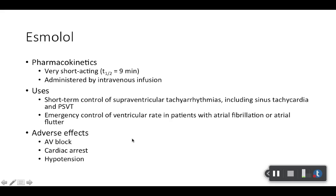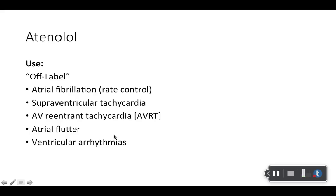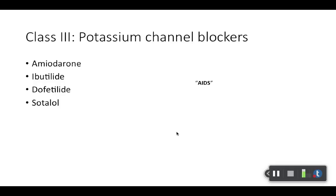Metoprolol is similar but more selective, which we talked about before, and it's used to treat all these different things — read through those. Esmolol — review from the hypertensive emergencies lecture, so refer to that and add these uses to it as well. Atenolol is also here — depending on the textbook you look at, you may or may not see this one because it is considered an off-label use, not FDA-approved. But in an off-label sense, it can still be classified as a class 2 antiarrhythmic. It's mainly classified as an antihypertensive — that's what its official FDA-approved uses are for.